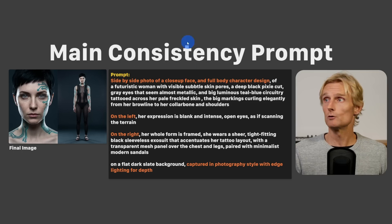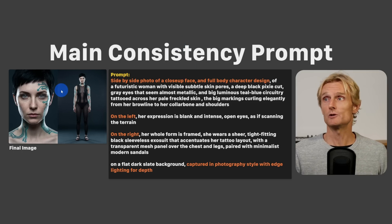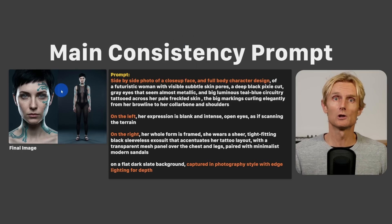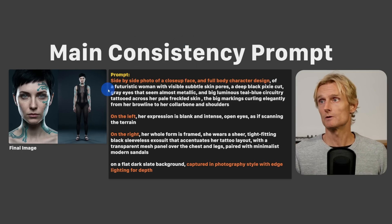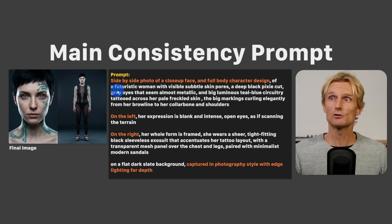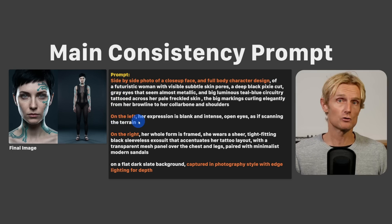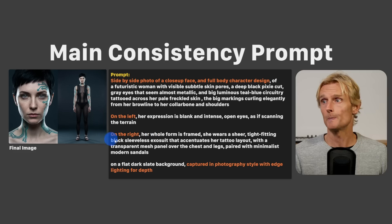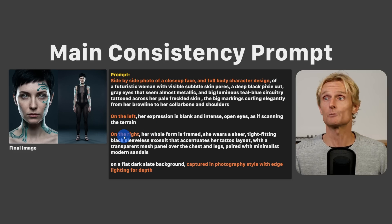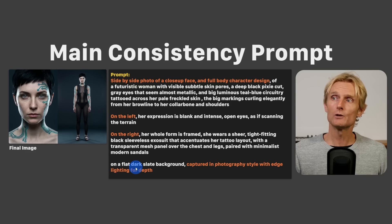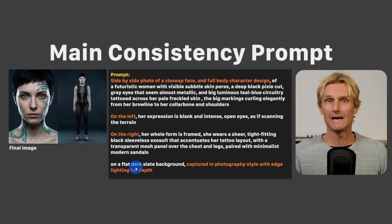Back to the main consistency prompt. For this to work and get these kinds of images, you need to follow a special structure. You start by describing the woman's face at the top. Then you use 'on the left' and describe her expression. Then 'on the right' to describe her outfit plus position. And at the end, you finish with a style and a lighting.